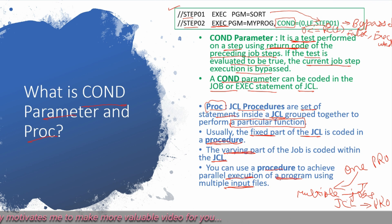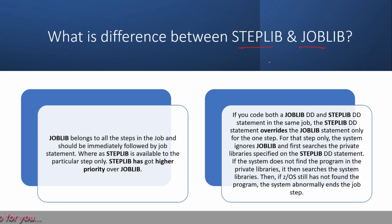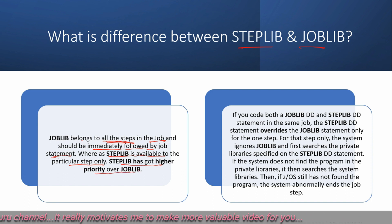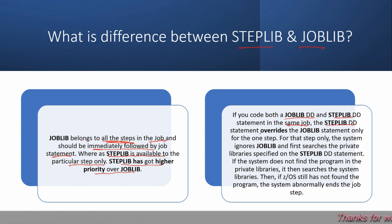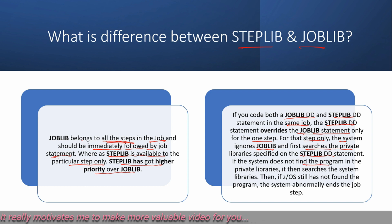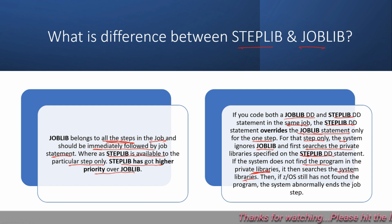Next question: what is STEPLIB and JOBLIB? JOBLIB belongs to all steps in the job and should immediately follow the JOB statement or job card, whereas STEPLIB is available to a particular step only. STEPLIB has higher priority over JOBLIB. If you code both a JOBLIB DD statement and a STEPLIB DD statement in the same job, the STEPLIB DD statement overrides the JOBLIB statement for that one step only. The system ignores JOBLIB and first searches the private library specified in the STEPLIB DD statement. If the program is not found there, it checks the system library.